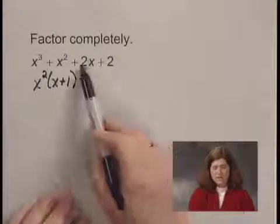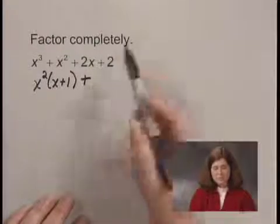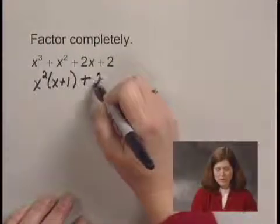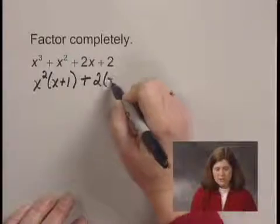Then I factor out a common factor out of 2x plus 2, and that common factor is 2. So I have 2 times x plus 1.